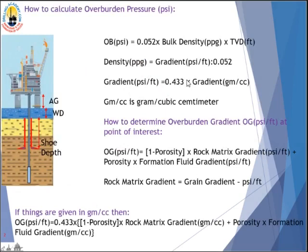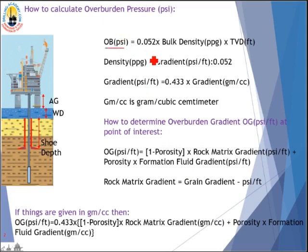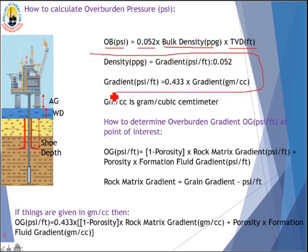So how do we calculate overburden pressure in psi? Let's call OB the overburden in psi. The classic formula is 0.052 times the bulk density times the depth of interest. Remember these two conversion formulas: density in ppg equals gradient in psi per foot divided by 0.052, and gradient in psi per foot equals 0.433 times the gradient expressed in grams per cubic centimeter.